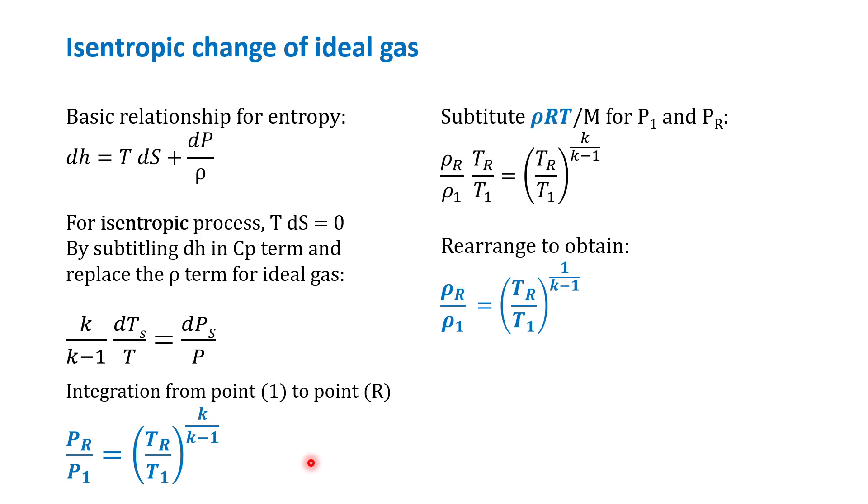Another one is that from this equation, if you substitute ρ equals P RT over M, we will find out this equation. And when you rearrange this one, we will be able to get the density relationship of a gas at two different isentropic conditions. These two relationships will be used to derive the equation in the isentropic flow.